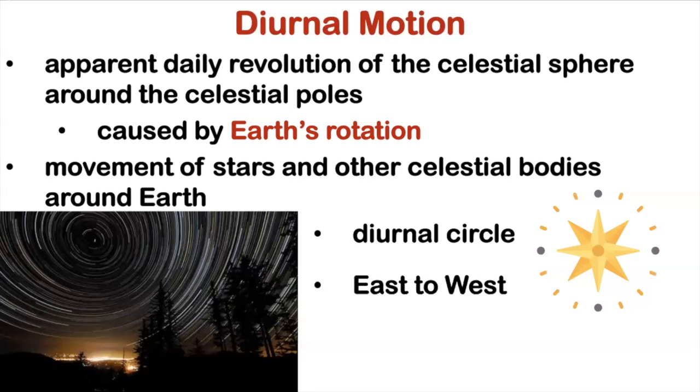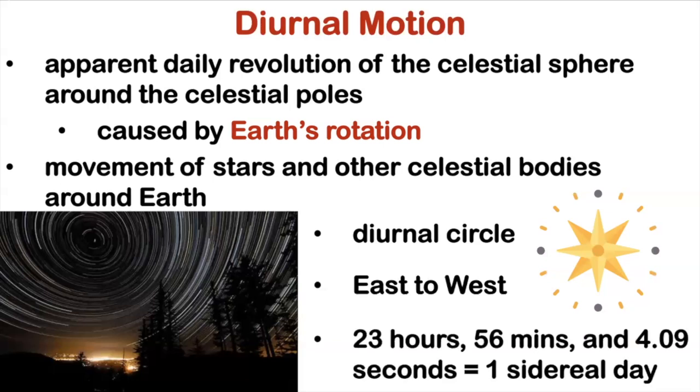Now, you should know that the time for one complete rotation is 23 hours, 56 minutes, and 4.09 seconds. So this is what we call a one sidereal day. So that's it for diurnal motion.